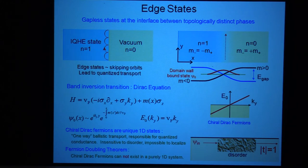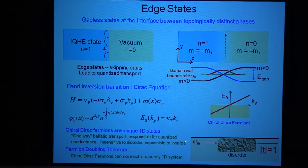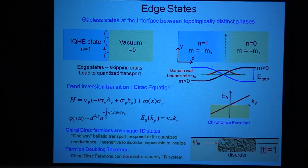If you put in an electron here, it has basically no choice but to go forward, so you know with a hundred percent certainty it's going to come out the other end. It has perfect transmission, and that perfect transmission allows you to measure the quantized transport in the quantum Hall state to incredible one part in a billion accuracy.